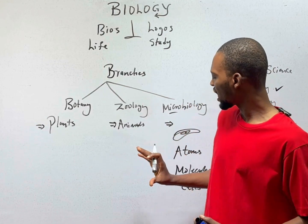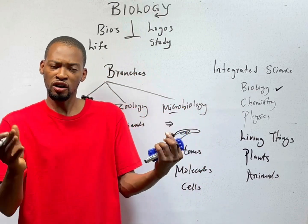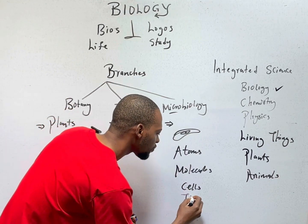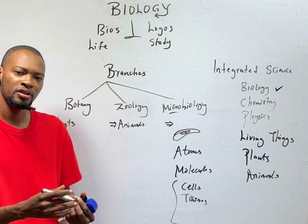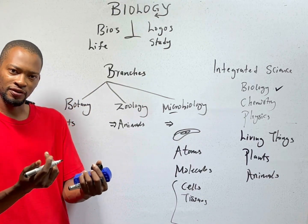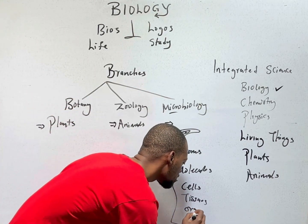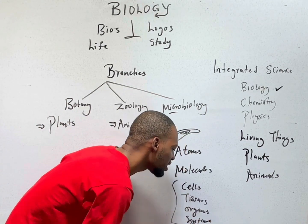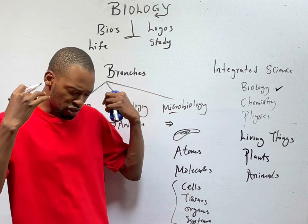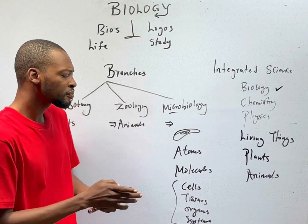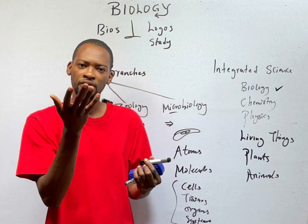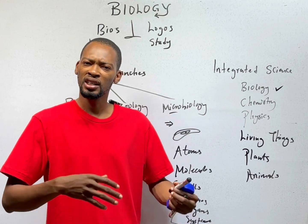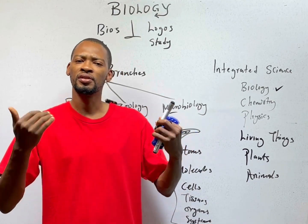Cells can combine — groups of cells coming together to perform specific functions — and we call them tissues. Then from tissues, we move to organs, and from organs, we move to systems. From systems, you have the full organism, because the full organism is built of various systems. Like in the body: systems that help you breathe are the respiratory system; systems for reproduction are the reproductive system; systems that help you digest or absorb food are the digestive system; systems that help with coordination are the nervous system, and so on.